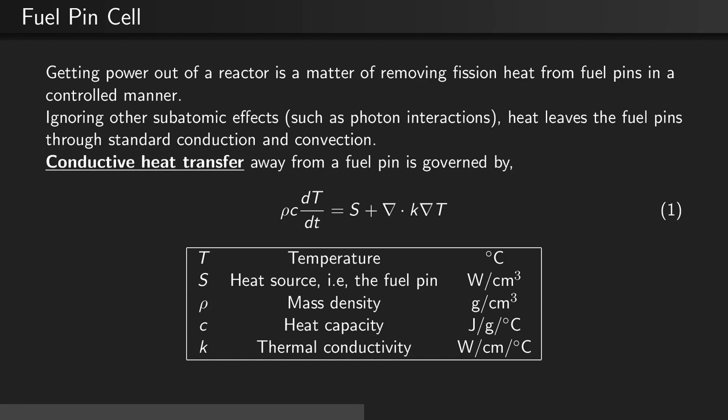Conductive heat transfer away from a fuel pin is governed by the density times the heat capacity multiplied by the time derivative of the temperature, equal to the source of the heat — in our case the fuel pin — plus the divergence of the thermal conductivity times the gradient of the temperature.